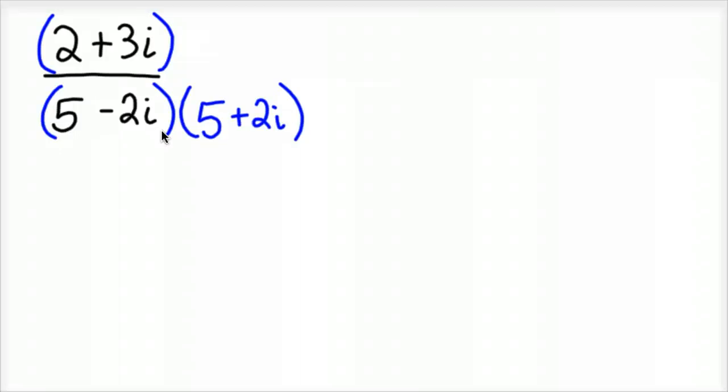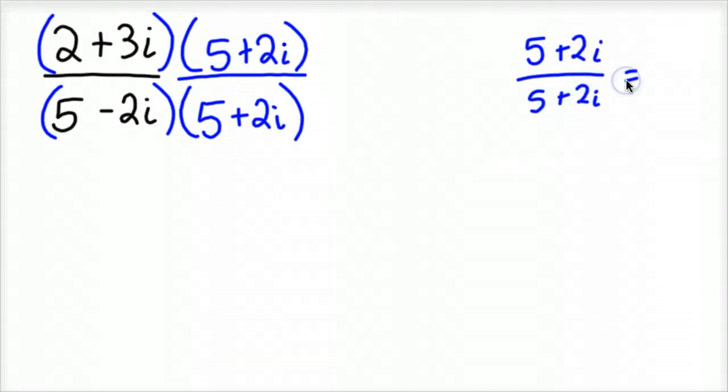And so whatever you do to the bottom, we don't want to change the problem at all. You have to do to the top because you really want to multiply by 1. Because if you take 5 plus 2i divided by 5 plus 2i, that is 1. So this is really, this is a fancy number 1. So, you know, that is, anytime you divide two numbers are the same. Just like if you took 100 divided by 100, that is 1. So it works the same way even with complex numbers. I'm not breaking any mathematical rules here.